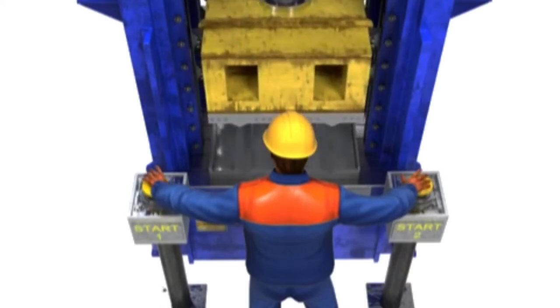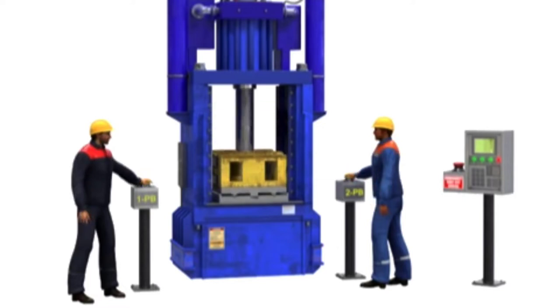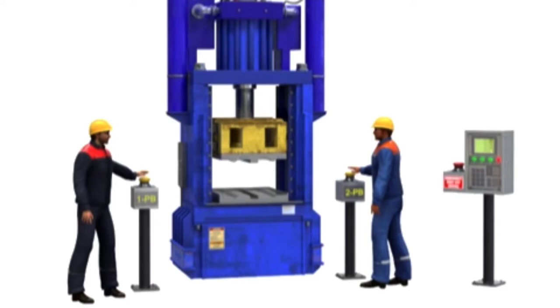Two-hand controls can also describe a machine that requires two separate operators typically located on opposite sides of the machine. Both operators must be in place to allow the machine to start its cycle. For this type of machine, two-hand operation controls typically consist of two push buttons wired in series.